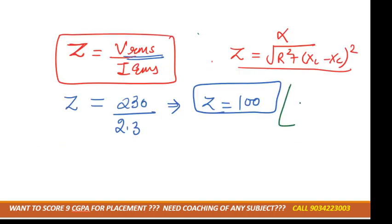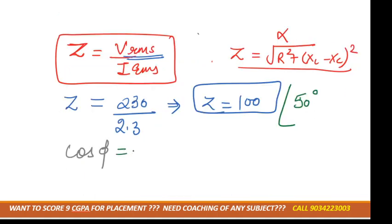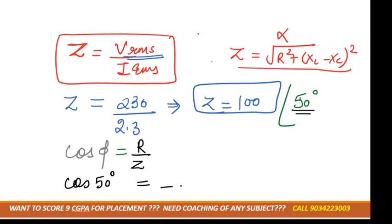So phi (the phase angle) is 50 degrees. We also need to calculate cos phi. To identify the circuit elements means calculating R and L values. The formula for power factor is cos phi equals R divided by Z. We know phi is 50 degrees and Z is 100, so from here we can get the value of R.